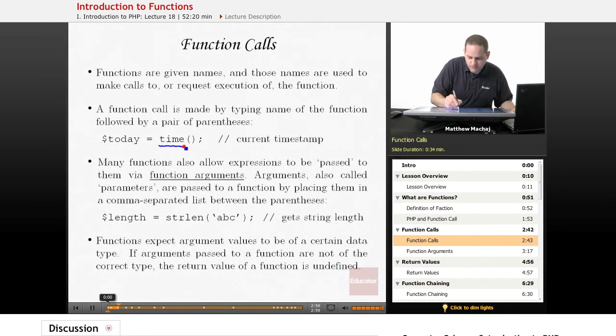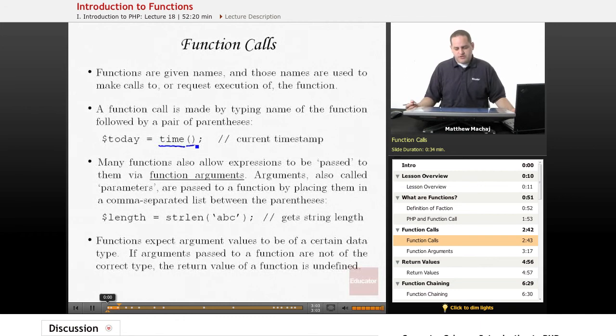In this case, the time function is a built-in PHP function, and it gets a current timestamp of the date and time right at the moment. So that's an example of a function with what's called no arguments.